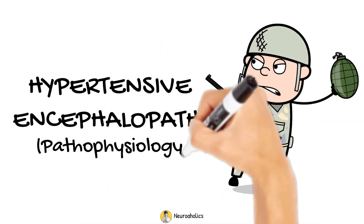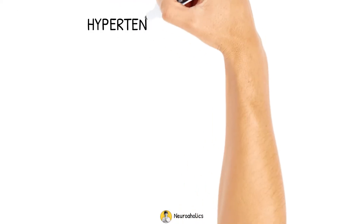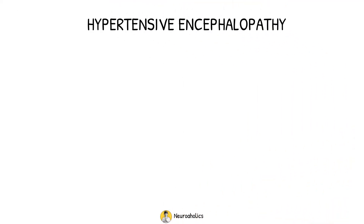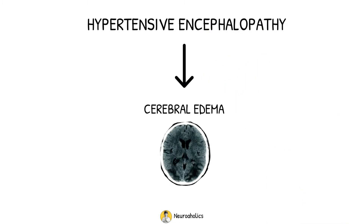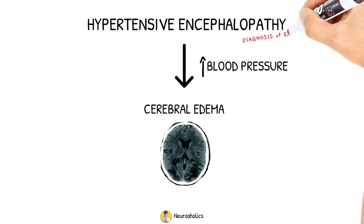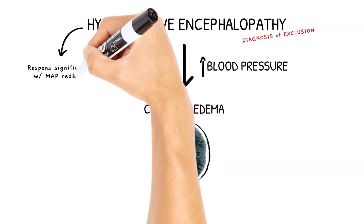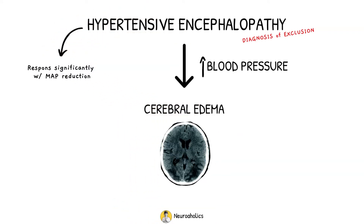Hypertensive Encephalopathy. The term hypertensive encephalopathy refers to the presence of signs or symptoms of cerebral edema produced by significant and abrupt increases in blood pressure. It is mainly an exclusion diagnosis when other causes of central nervous system dysfunction have been ruled out, and it often responds significantly to abrupt reduction of mean arterial pressure.